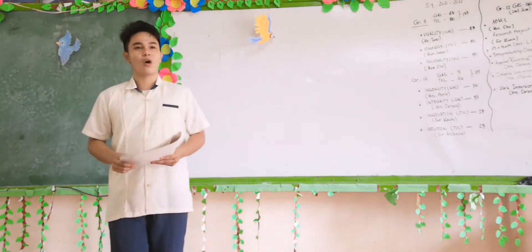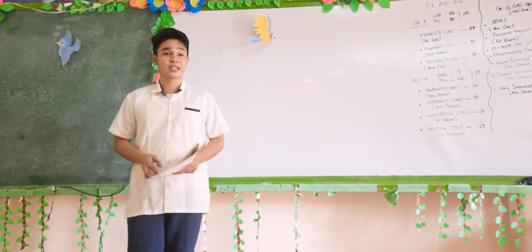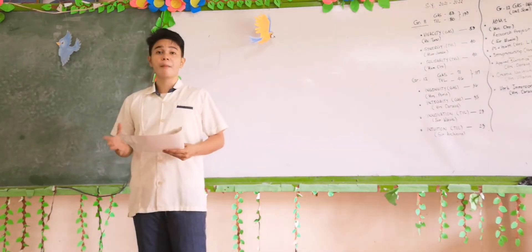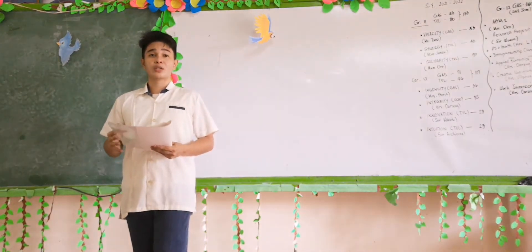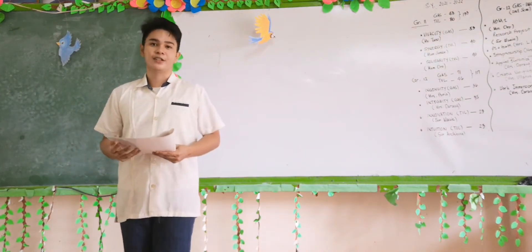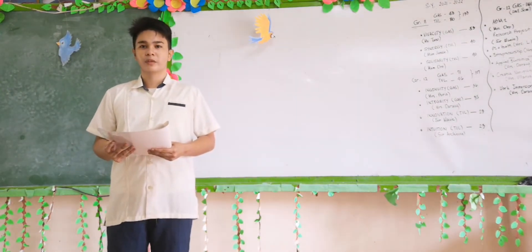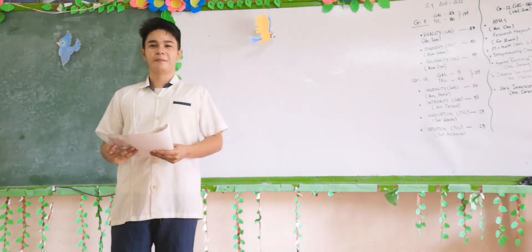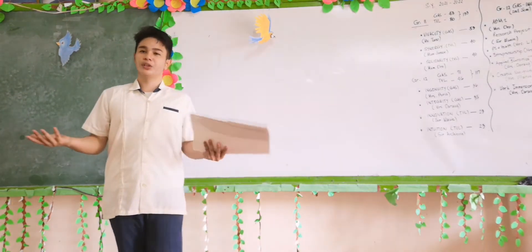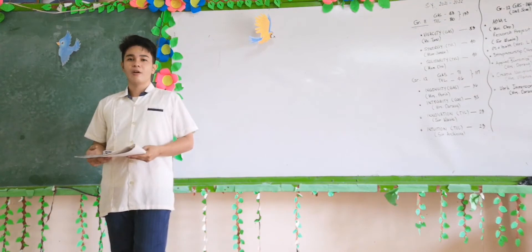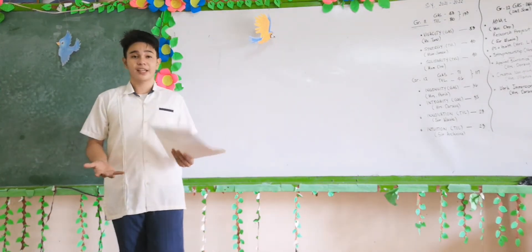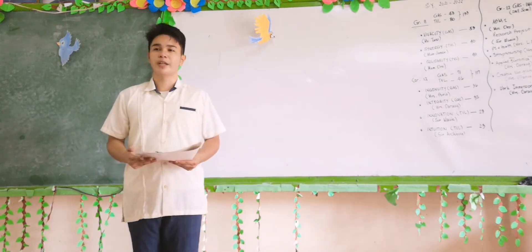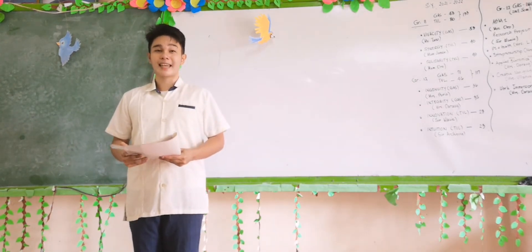How do you find the activity? How did you come up with those performances and answers? Since we're done discussing all the things you need to know about interest and the preliminary related terms, let's test your knowledge. I know that you got everything that we discussed, so prepare a one-fourth sheet of paper and get ready.